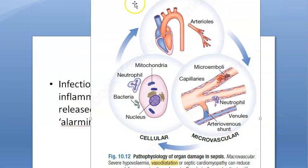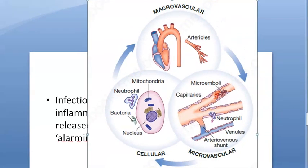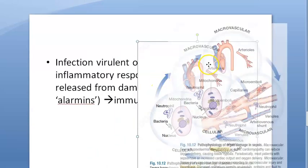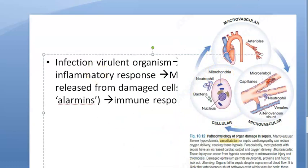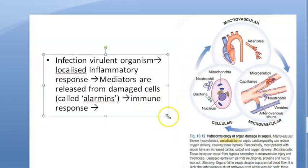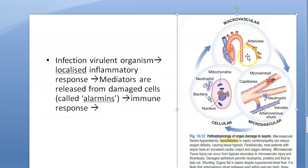What will happen after this? Sepsis will lead to multi-organ failure. Why does multi-organ failure happen? Because of inflammation, because of immune response. There will be vasodilation, hypoxia, and this inflammatory response will lead to multi-organ failure. There is direct injury by microorganisms or hypoxia or vasodilation, and finally multi-organ failure.